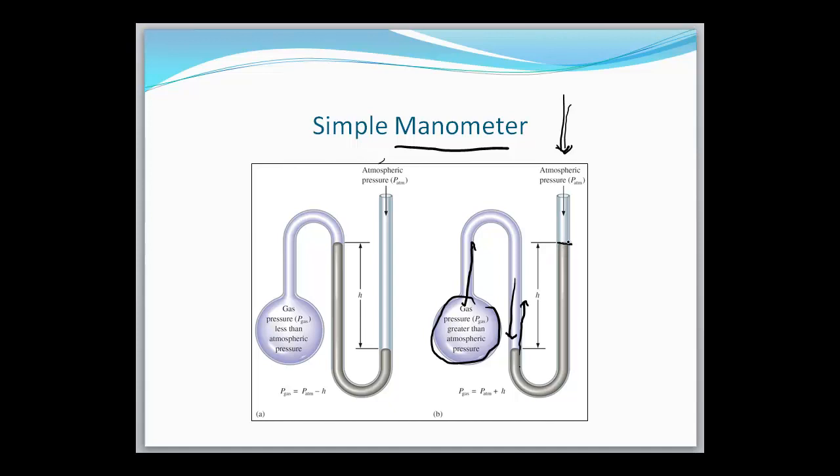So if this column is higher than this column, it means the gas inside the container is able to push against atmospheric pressure by a certain amount. And that certain amount would be equal to that height. So the pressure of the gas here, let me rewrite this so it's a little bigger, the pressure of the gas is going to be equal to the pressure of the air plus the height of the column.